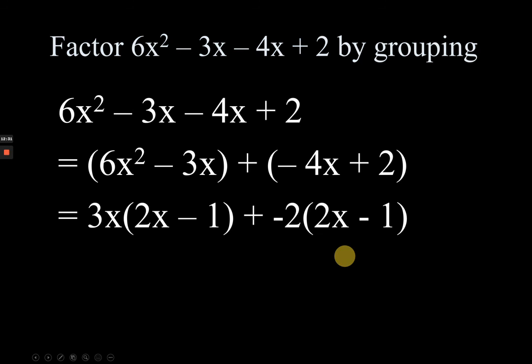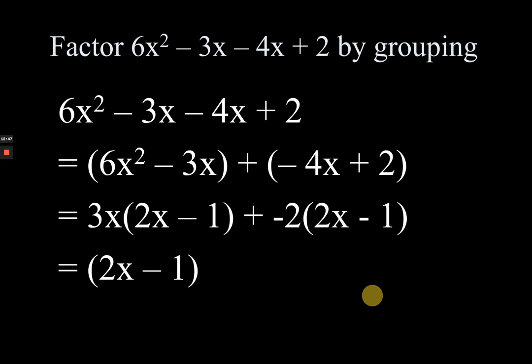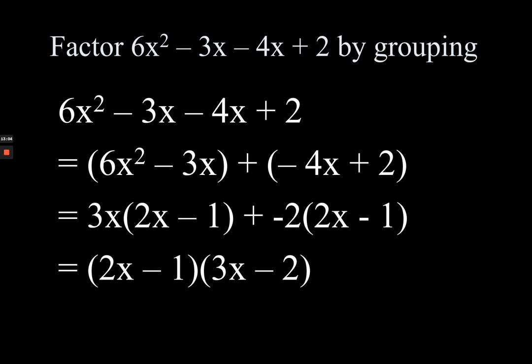It may be confusing at first since this is a new lesson, but you'll get used to it with practice. The common factor (2x - 1) appears in each set of terms, giving us the final answer: (2x - 1)(3x - 2). You may watch the video again if it's confusing — if you did understand it, you are amazing. Thank you!